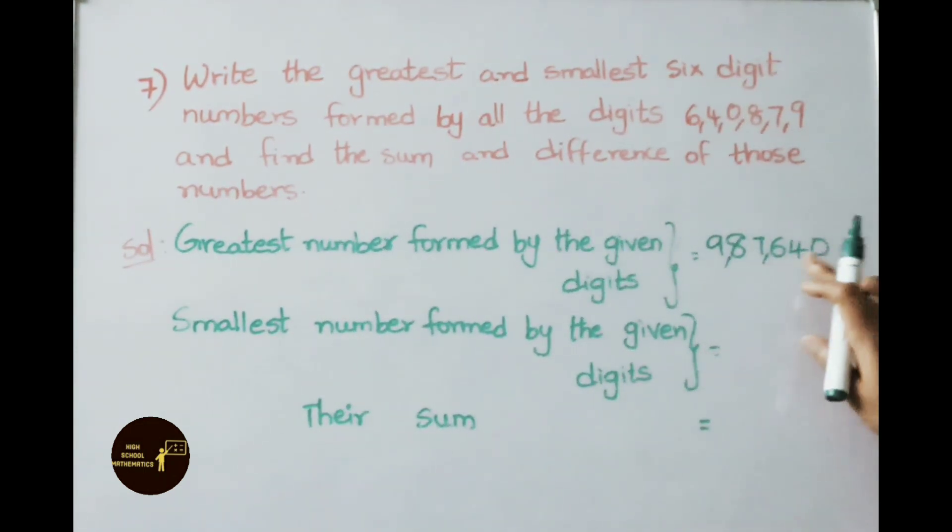So the greatest number formed by the given digits is 9,87,640. Smallest number formed by the given digits: To avoid that error, we just reverse the digits here: 4, 0, 6, 7, 8, 9. Separate them by using commas. Now the number is 4,06,789.